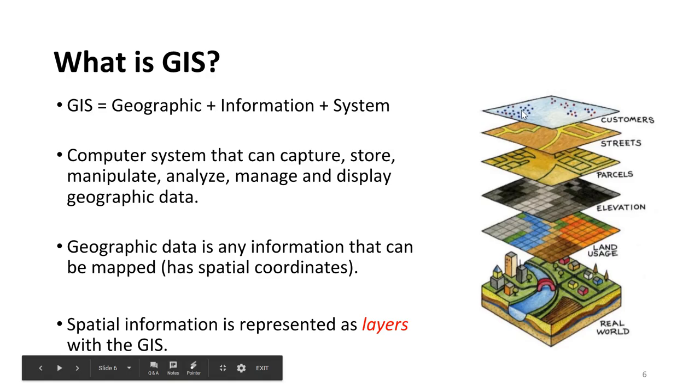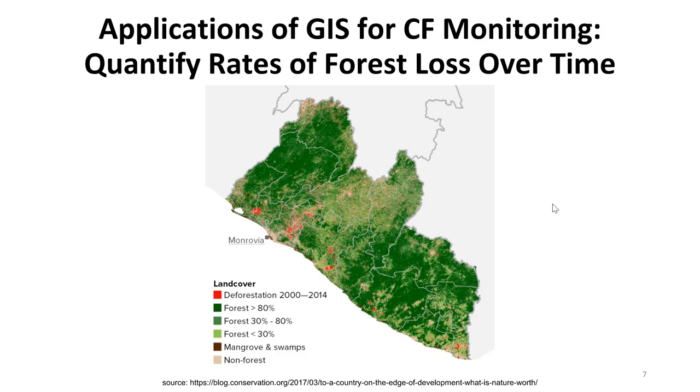In GIS, spatial information is represented as layers. So these layers here, each different layer would represent a different type of spatial data, be it street data which is represented as lines, housing or parcels which would be represented as polygons, elevation data, or perhaps land use data. And so all of these layers act as a proxy to mapping the real world.